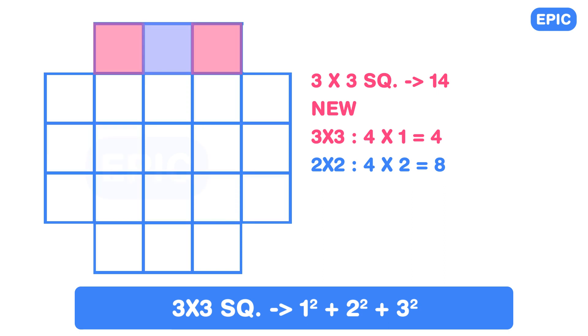What about 1 x 1 squares? We have a total of 3 x 4, 12 new 1 x 1 squares. So it will have a total of 14 plus 4 plus 8 plus 12 equals 38 squares.